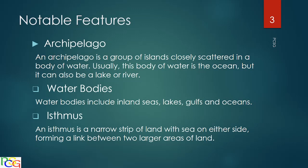I'm going to show you this on the map, so don't be dismayed if you don't really get what's going on. The isthmus is a narrow strip of land with sea on either side, forming a link between two larger areas of land. There's actually one on the Caribbean map that I'll show you in a second.